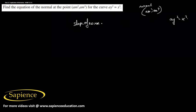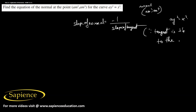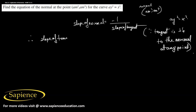The slope of the normal is equal to minus 1 divided by the slope of the tangent, since the tangent is always perpendicular to the normal at any point on a curve. Therefore, first we need to find the slope of the tangent, which is dy/dx.